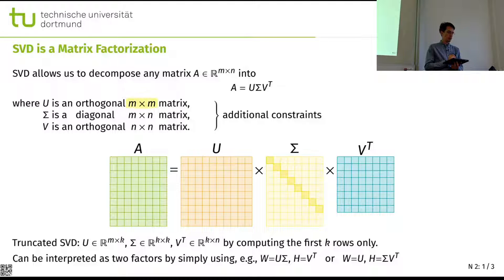And we have U that is square. We have V that is square. And we have a non-square matrix that is diagonal in the middle. So it was a decomposition into three parts.